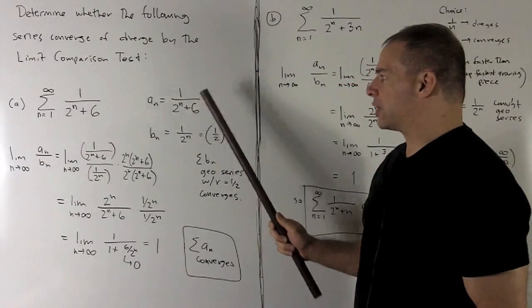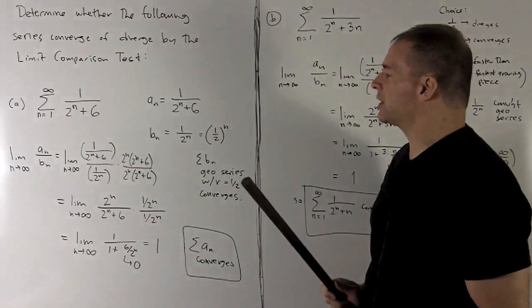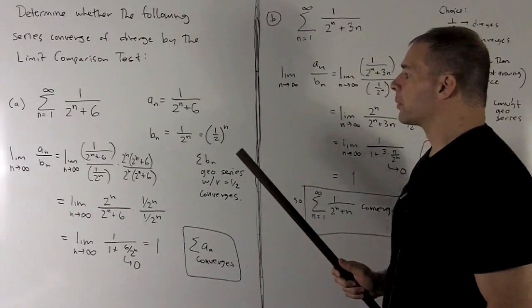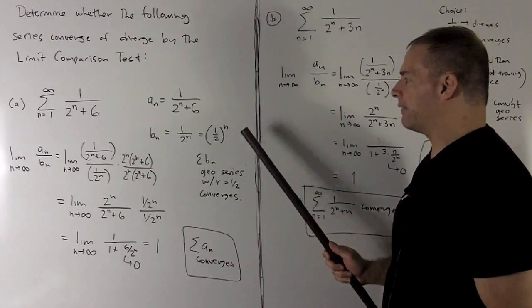So let's see, our a to the n is going to be 1 over 2 to the n plus 6. I squint at this, and this looks pretty much like 1 over 2 to the n, which I can rewrite as 1 half to the n.